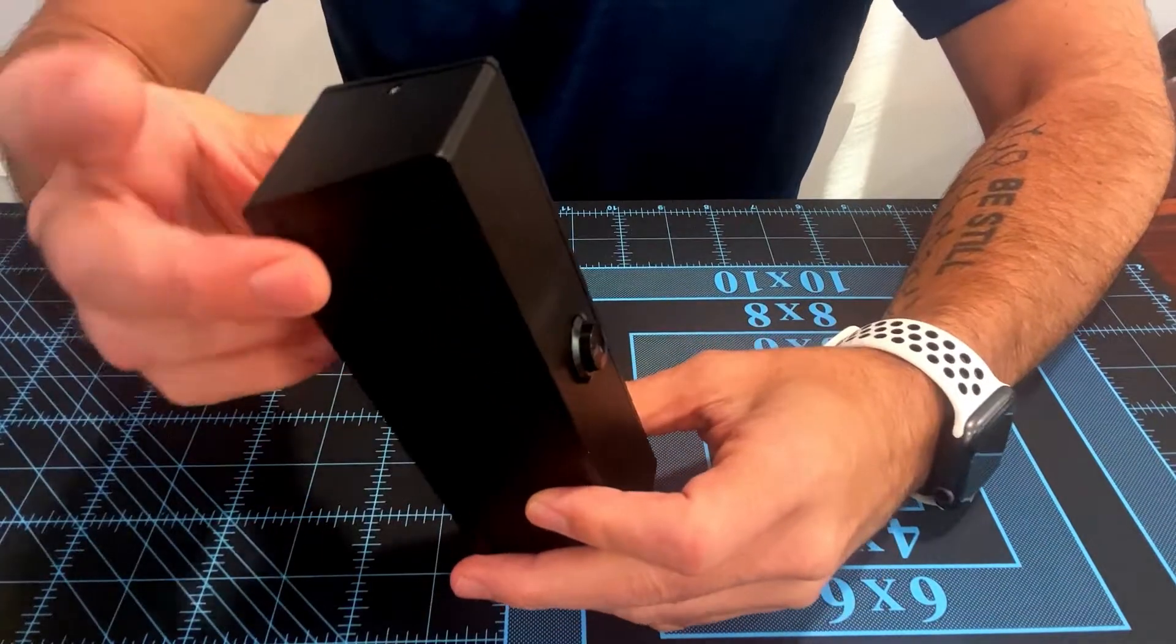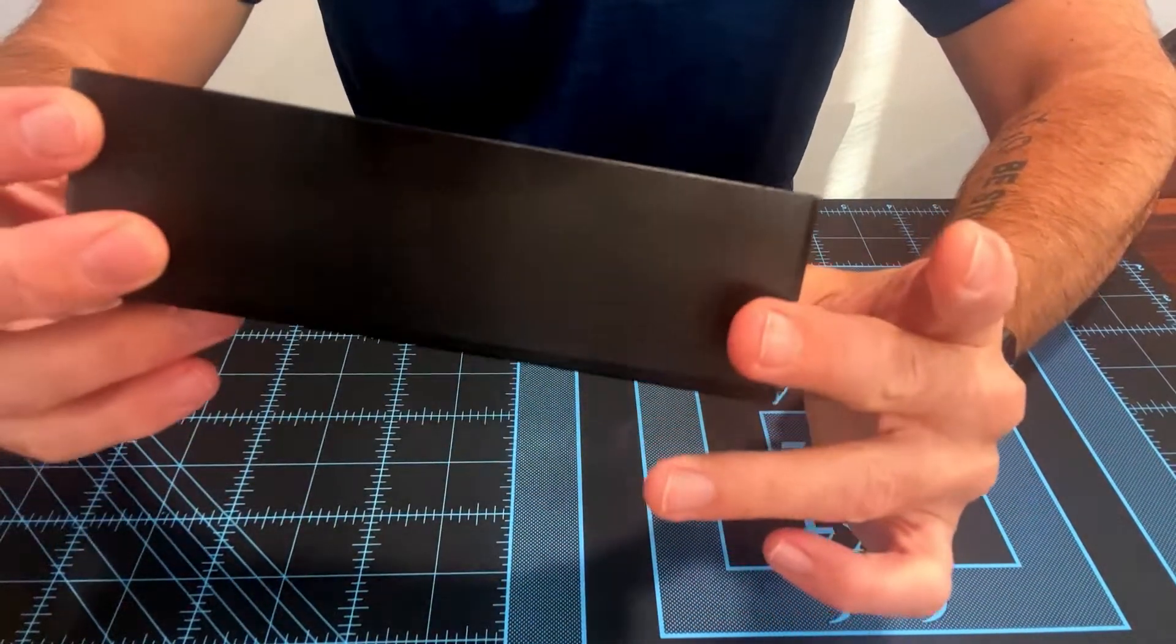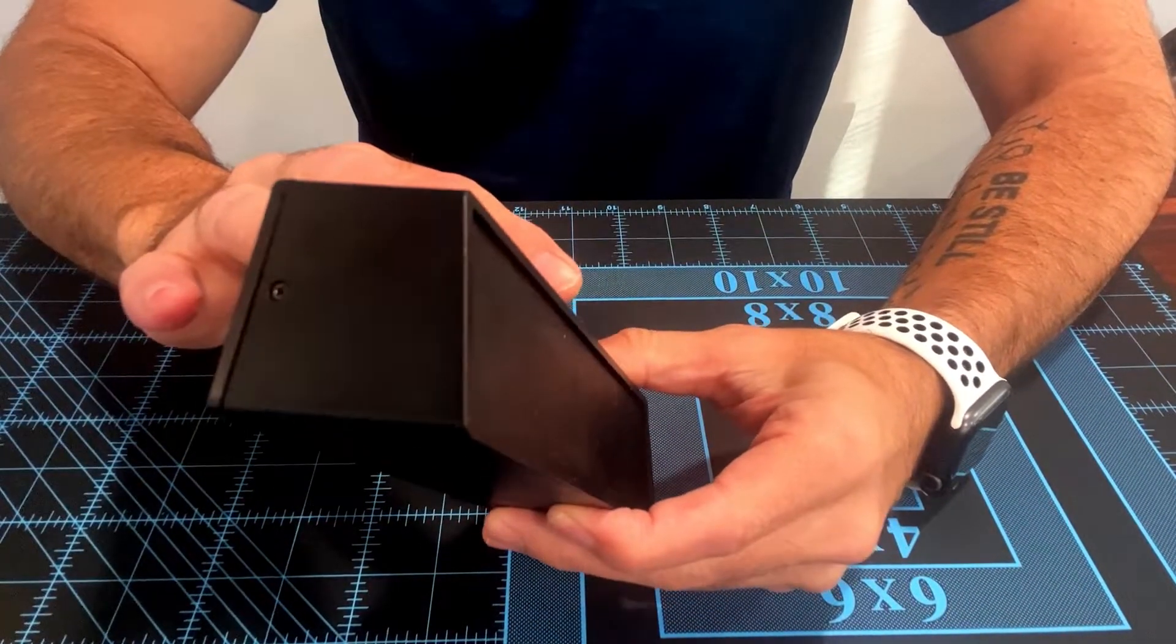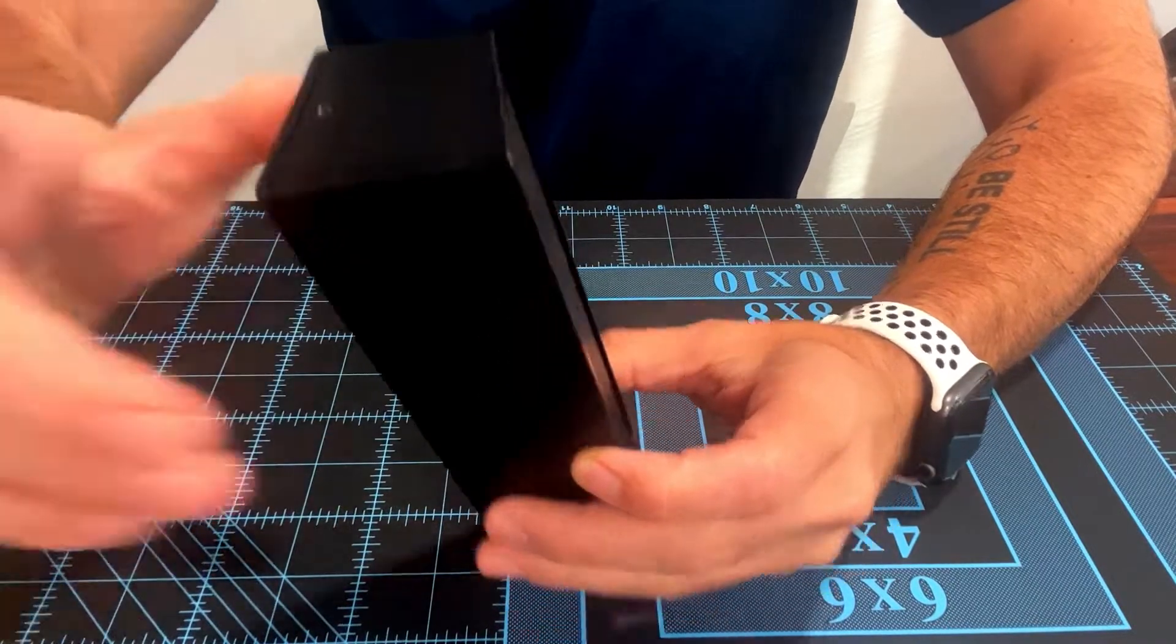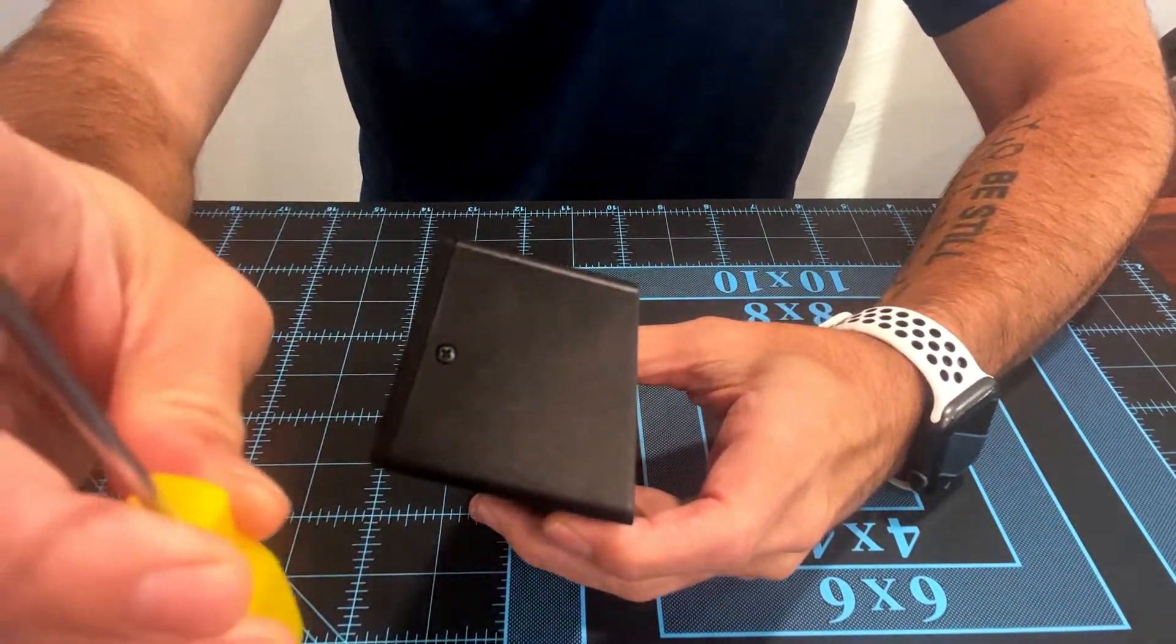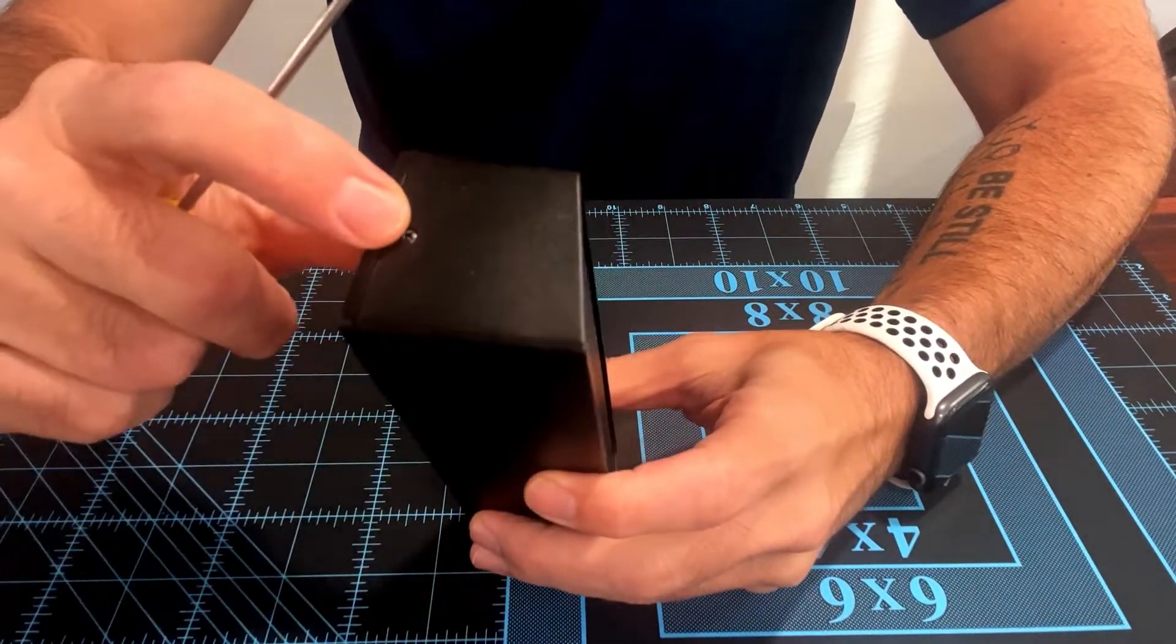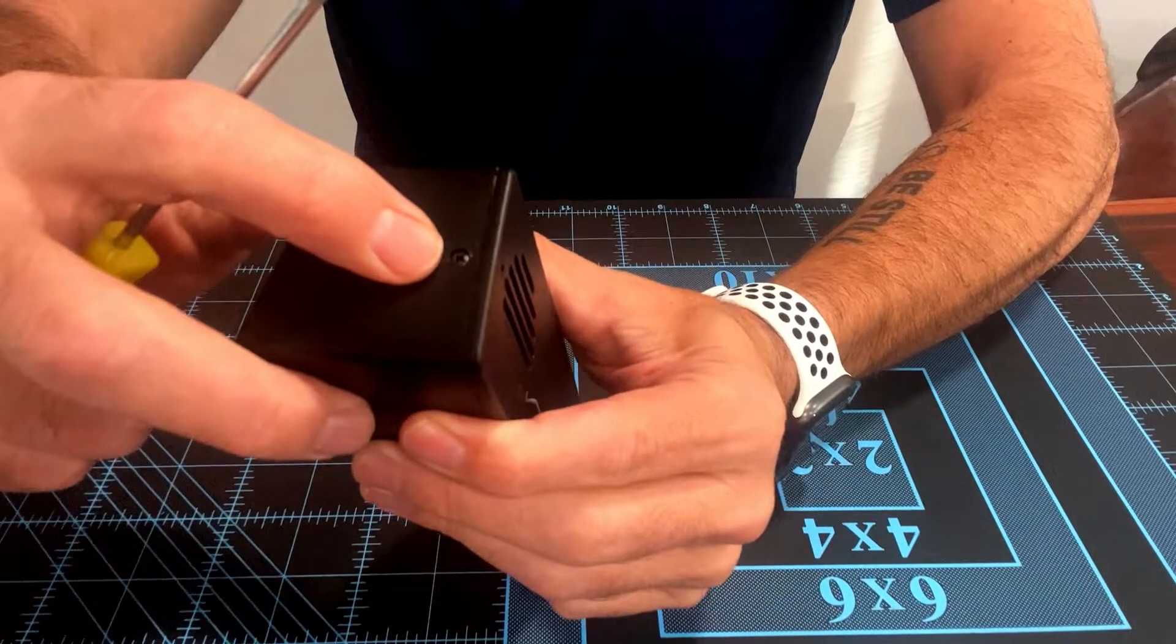In this video I'm going to show you how to disassemble SugarPixel, how to replace components and all of that. So to start, you're going to need a Phillips screwdriver. We're going to remove the two screws, one on each side.